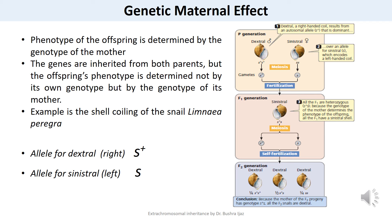If a male homozygous for the dextral allele (S⁺S⁺) is crossed with a female homozygous for the sinistral allele (ss), all F1 offspring are heterozygotes (S⁺s) and have sinistral shells, because the genotype of the mother (ss) encodes sinistral coiling. The mother's genotype — not the offspring's own genotype — determines the phenotype.